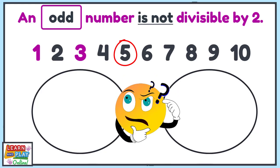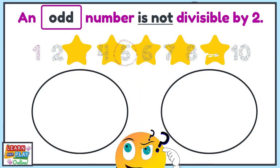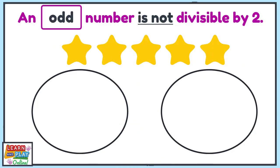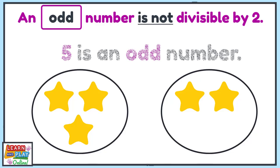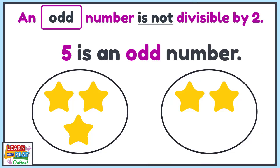That's right, number 5 is a number that is not divisible by 2. Let's use 5 stars this time to share into 2 equal groups to prove it. And as you can see, we have 2 unequal groups, which proves that the number 5 is an odd number.